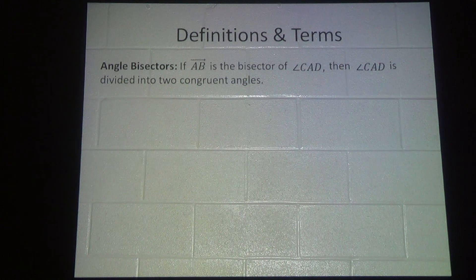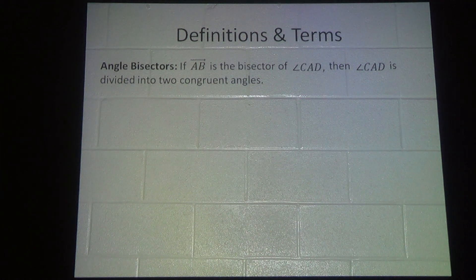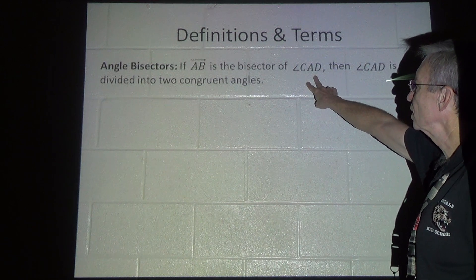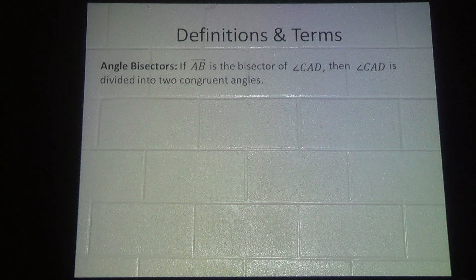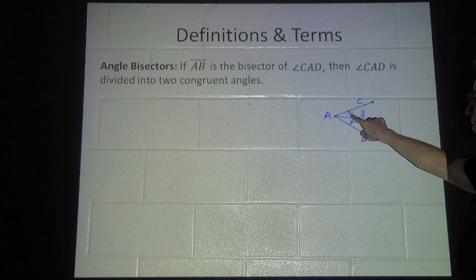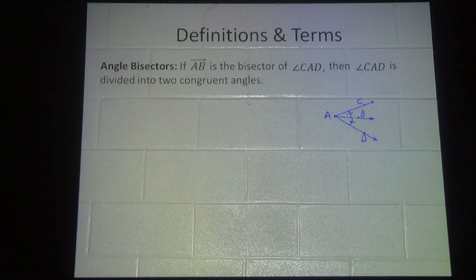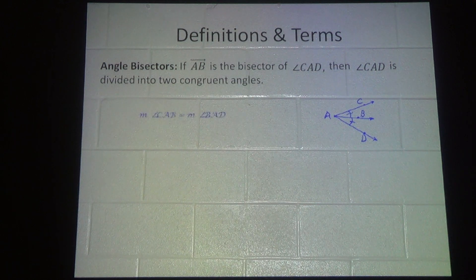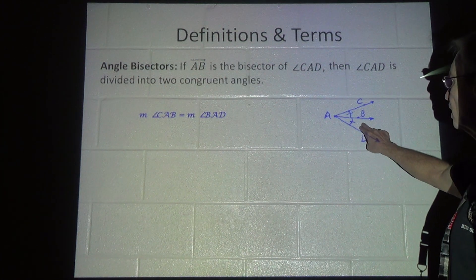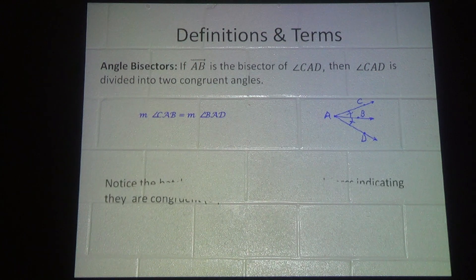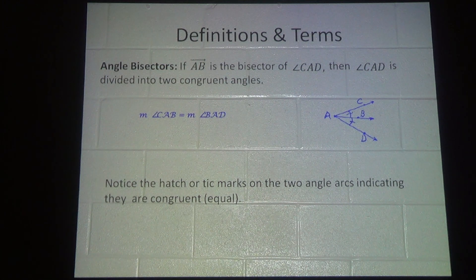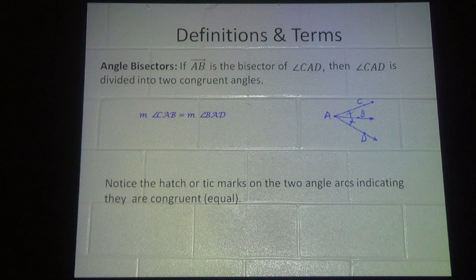Angle bisectors. If the ray AB is the bisector of this angle CAD, then angle CAD is cut into two equal pieces, or are bisected. Notice that we've got marks on these arcs right here that tell us that those two are congruent. The measure of angle CAB is equal to the measure of angle BAD. With the diagram, if they have these marks on here, that means that those two angles are congruent, whether they tell you anything else about it or not.